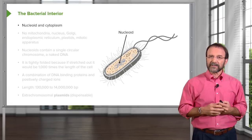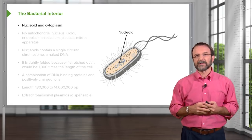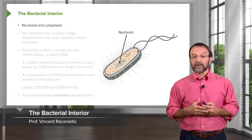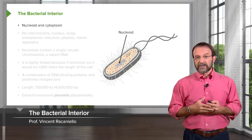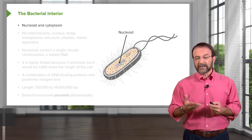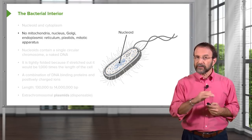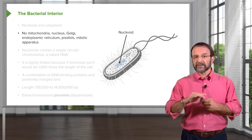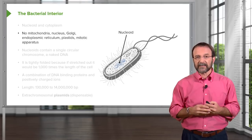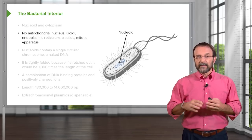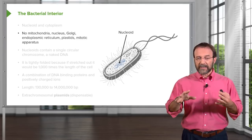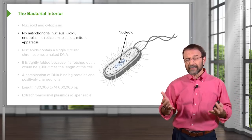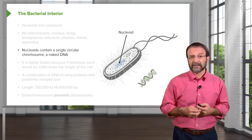Let's take a look at the interior in a little more detail. We have within the cytosol the nucleoid, which contains the nucleic acid of the bacteria. Again, there are no mitochondria in bacteria. There's no nucleus, no Golgi, endoplasmic reticulum, or mitotic apparatus. These are all structures found in eukaryotic cells, but we don't have them in bacteria.